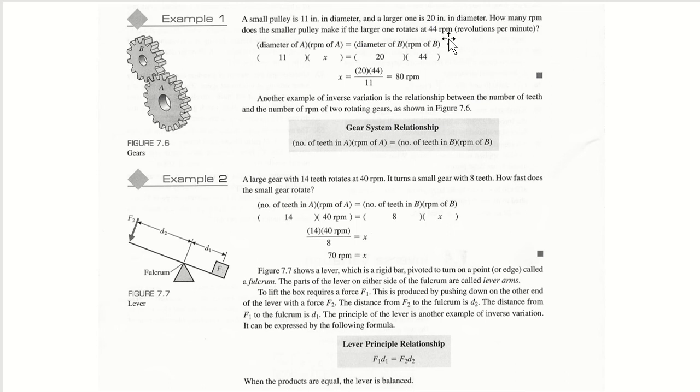If the large one rotates 44 times, the ratio is 20 to 11. So 11x equals 20 times 44. 20 times 44 divided by 11. So the smaller pulley would actually make 80 revolutions per minute when the larger is going 44 revolutions per minute.